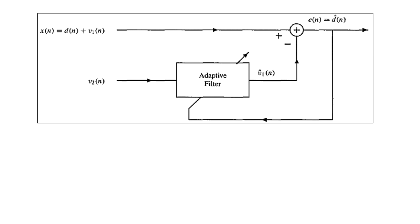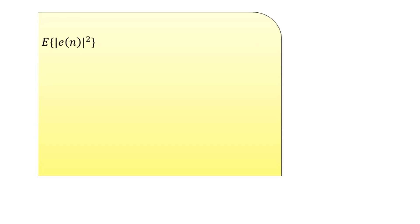If the reference signal v2(n) is uncorrelated with the desired signal d(n), it follows that minimization of the mean square error — the expected value of |e(n)|² — is equivalent to minimization of the expected value of |v1(n) − v̂1(n)|². In other words, the output of the adaptive filter is the minimum mean square estimate of v1(n).